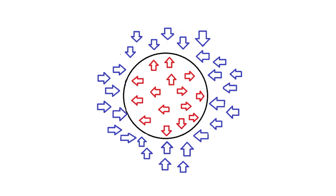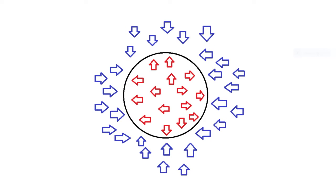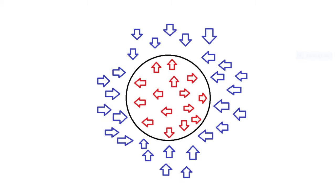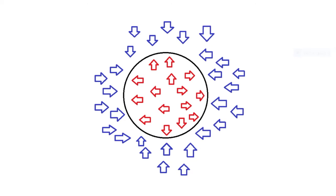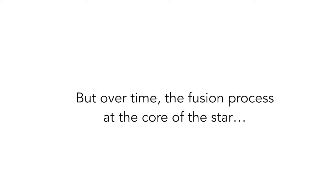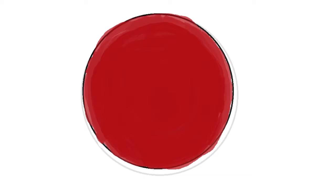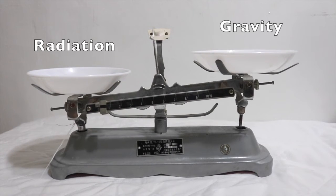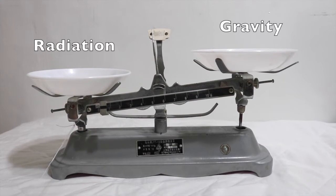Radiation from a star's core pushes against gravity. The red arrows represent radiation from the star and the blue arrows represent gravity. These two great forces push against each other, creating a very fragile balance. But over time, the fusion process of the core of a star burns out and creates iron, and iron does not create energy. Therefore, the iron builds up bigger and bigger to a critical point when there is no more energy. This affects the perfect balance between the star's radiation and gravity.